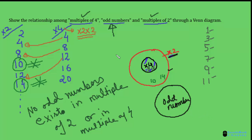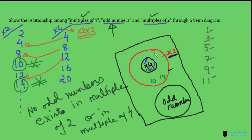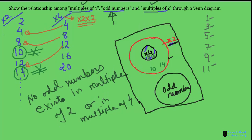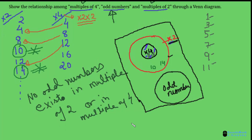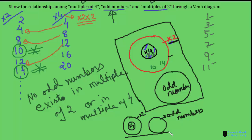The Venn diagram representing the relationship among multiples of 4, odd numbers, and multiples of 2 looks like this: the inner circle represents multiples of 4, the outer circle represents multiples of 2, and a separate non-intersecting circle represents odd numbers. I hope you have understood the logic behind such questions. The more you practice, the better you become. Keep practicing with DecodeMonk. Thank you.